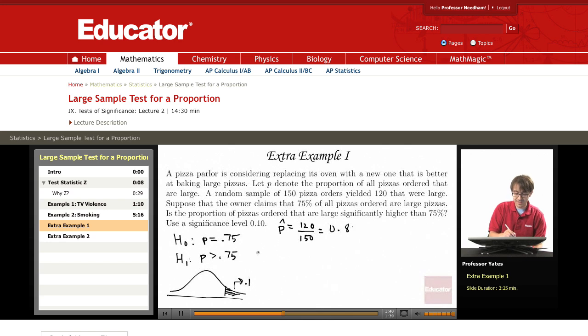So my test statistic that I'm working with, again we have p-hat minus p divided by the square root of p, 1 minus p over n. This gives me 0.8 minus 0.75 and in the denominator here we have 0.75 times 0.25 over 150 which is my sample size. So this gives me a z of 1.41.